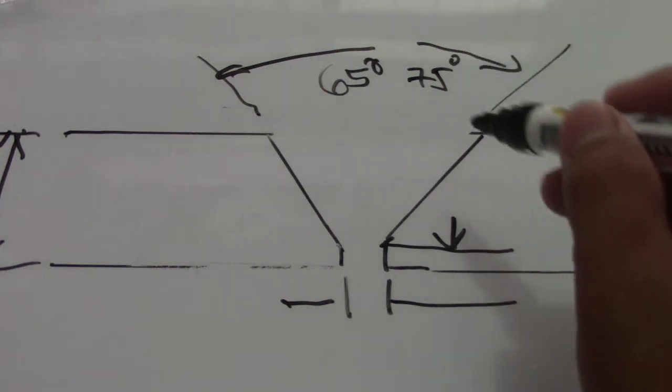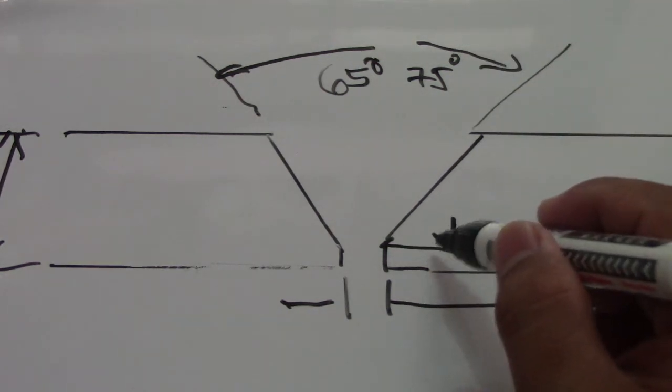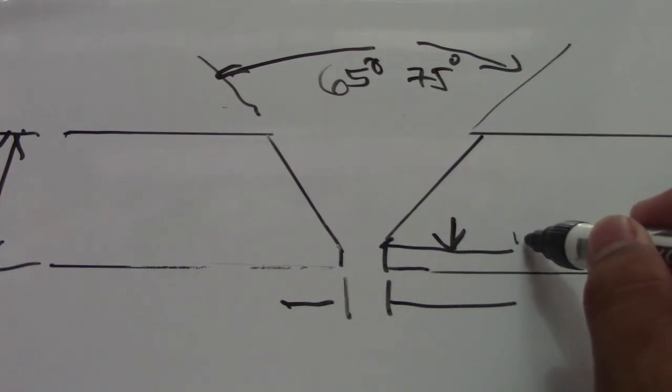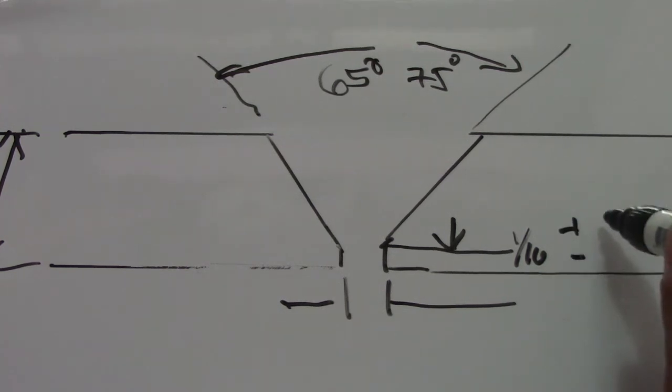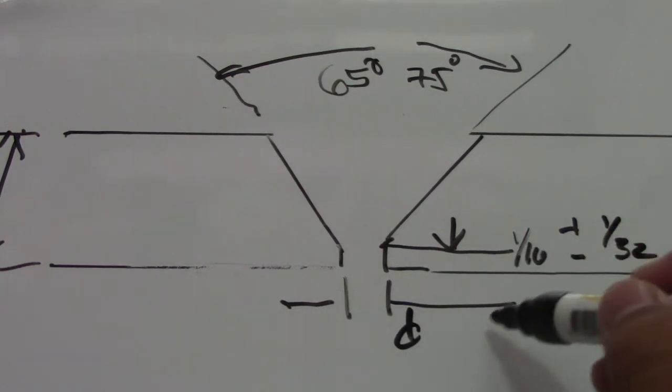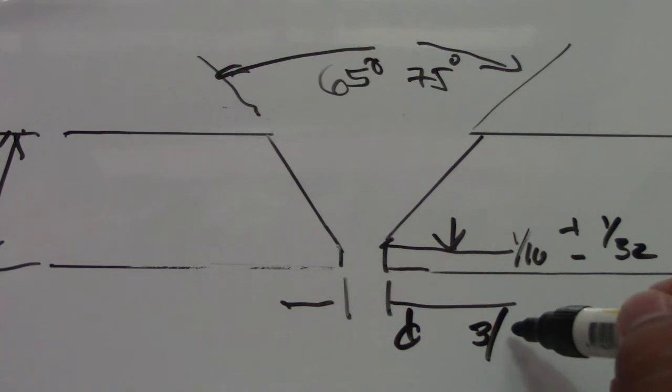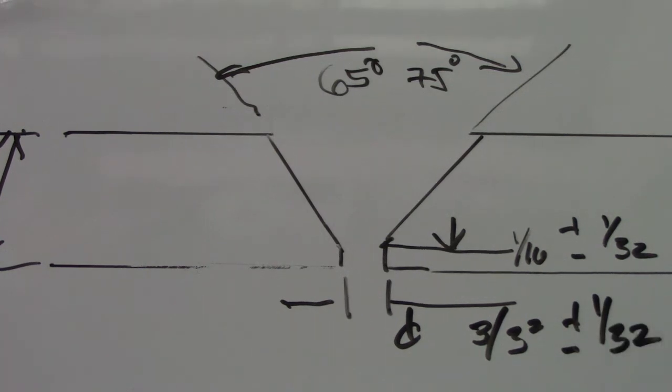And for this line, we have 1 1/16 inch, positive/negative 1/32. And this letter D, we have 3/32, positive/negative 1/32.